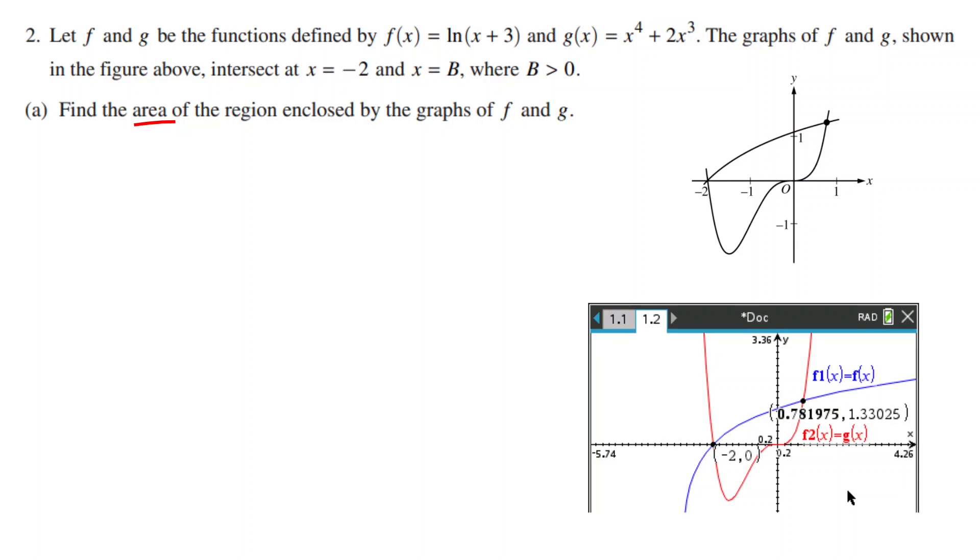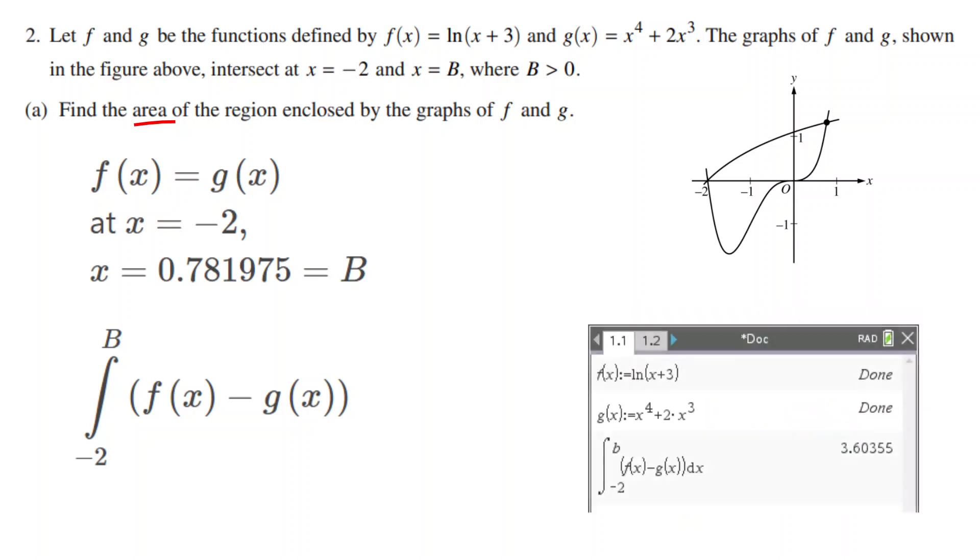f(x) equals g(x) at x equals -2 which is given in the problem and also at x equals 0.781975 which is the b value that the problem wanted us to find. We plug these into the area formula to get an integral from -2 to b of the top function f(x) minus the bottom function g(x). Make sure you don't mix those two up. We then calculate the value and it turns out to be 3.603.